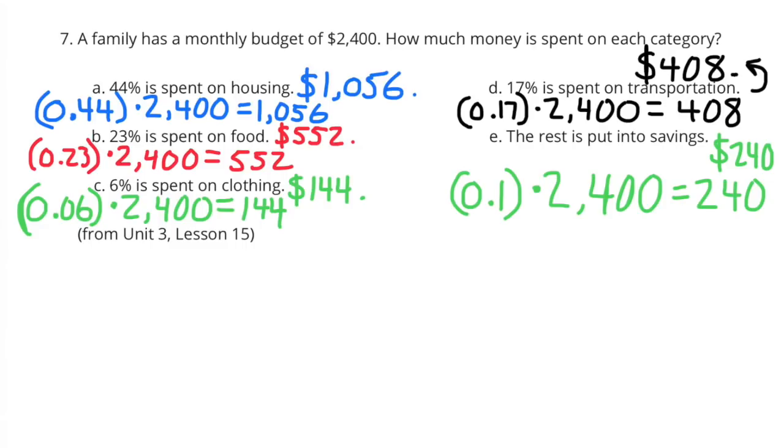C. 6% is spent on clothing. 6 hundredths times 2,400 equals 144. They would spend $144 on clothing.